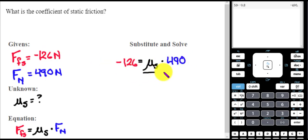In order to get mu static all by itself on the right-hand side, I'm going to divide by 490. And I do that so that these cancel. Whatever I do to the right side of the equal sign, I do to the left side of the equal sign as well. 490.